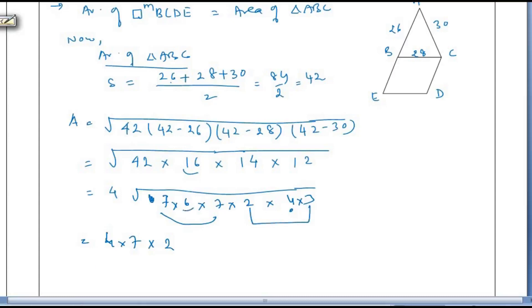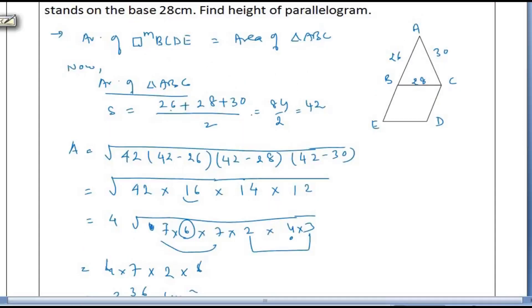Let us see 42. If we write, 7 times 6 is 42, 7 times 2 is 14, and 4 times 3 is 12. 7 is a pair, so 7 comes out. 4 root is 2. This is 3, 2, and 6. So 6 is out, and the whole square root is out of 2. And thus on multiplication, we will get 336 cm square. Clear? Both have the same area.